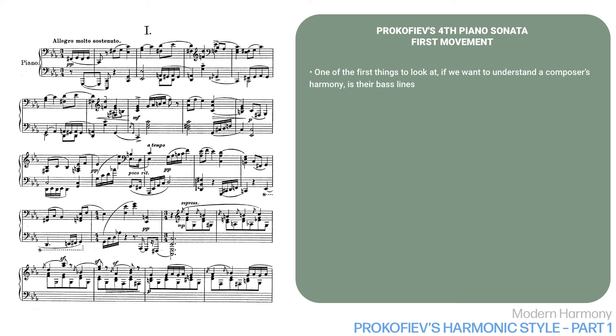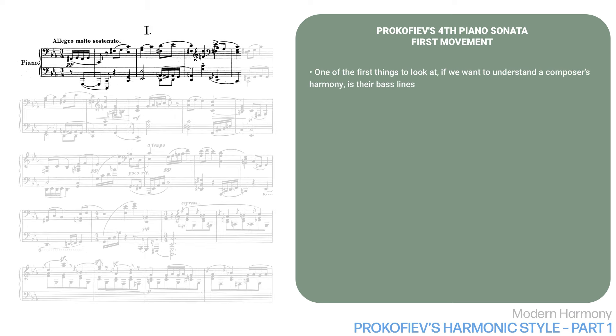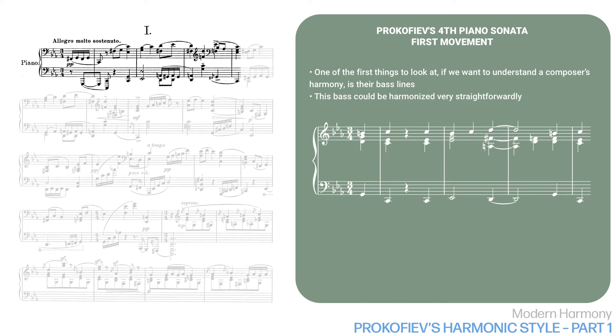One of the first things to look at if we want to understand a composer's harmony is their bass lines. A quick look at the first phrase of the sonata shows a typical tonal bass line. In fact, this bass could be harmonized very straightforwardly, like this.